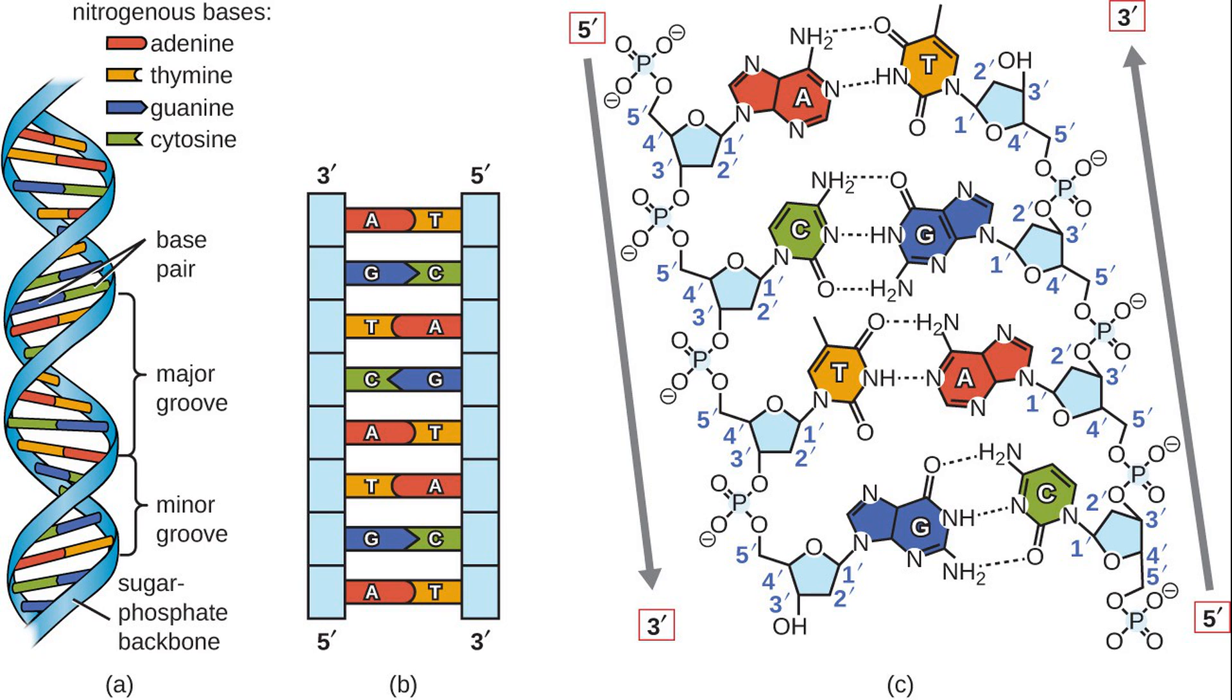As a result of this, a DNA strand has a five-prime end that has a phosphate group attached to the five-prime carbon of the sugar, and a three-prime end that has a hydroxyl group attached to the three-prime carbon. In a double helix, the complementary strands run anti-parallel to each other with regard to their five-prime and three-prime ends.